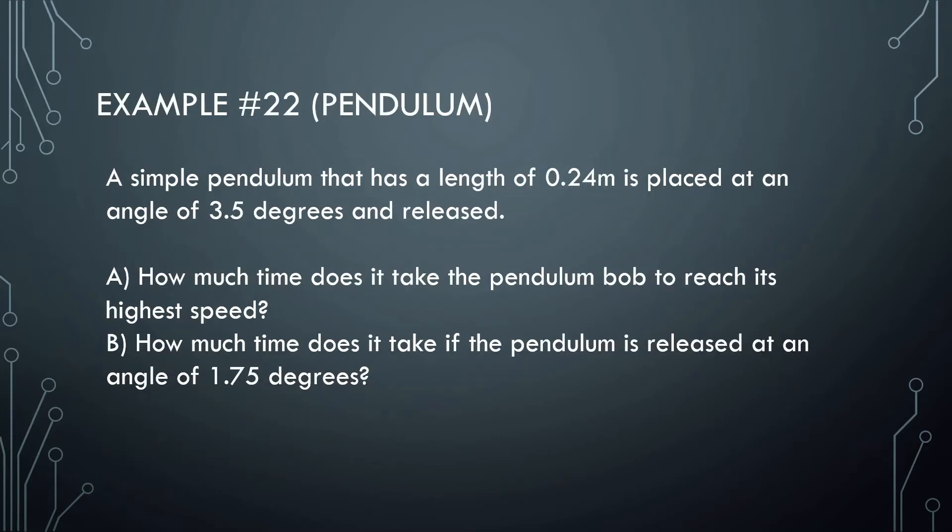A simple pendulum has a length of 0.24 meters, is placed at an angle of 3.5 degrees and released. How much time does it take the pendulum to reach its highest speed? Let's draw this out. We have a pendulum like this. The angle is 3.5 degrees. We should know the highest speed is when it reaches its equilibrium position here, the V max. We're trying to find how long it takes to go from here to here, the time.